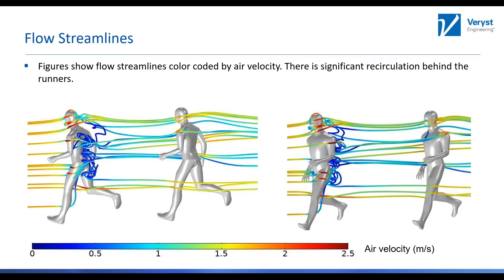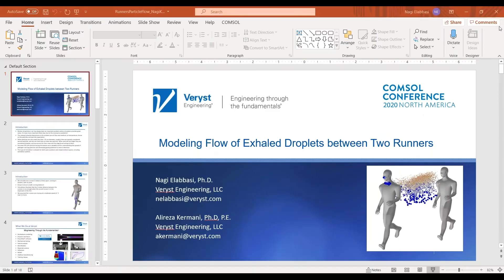Some results first for the flow — these are the flow streamlines. There's recirculation going on behind the front runner, as you can see, but also behind the rear runner. We pick the particles that highlight the circulation behind the rear runner.